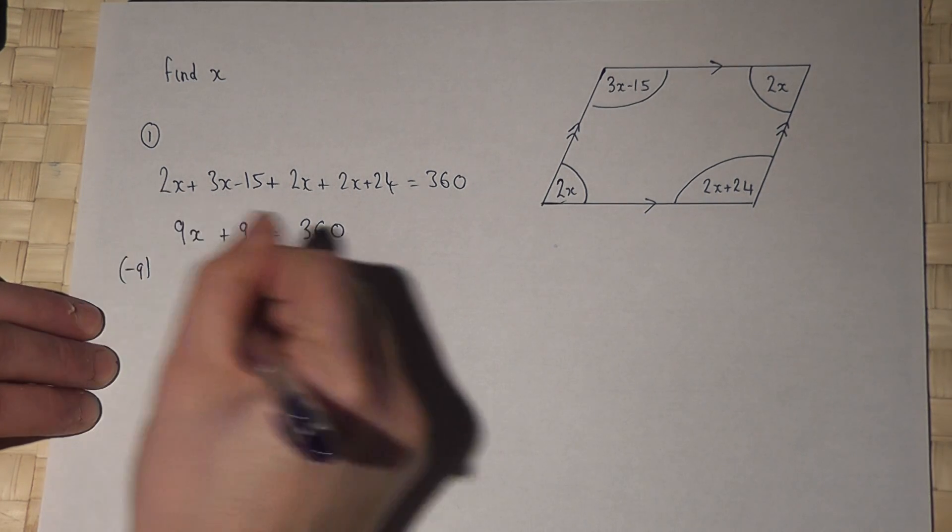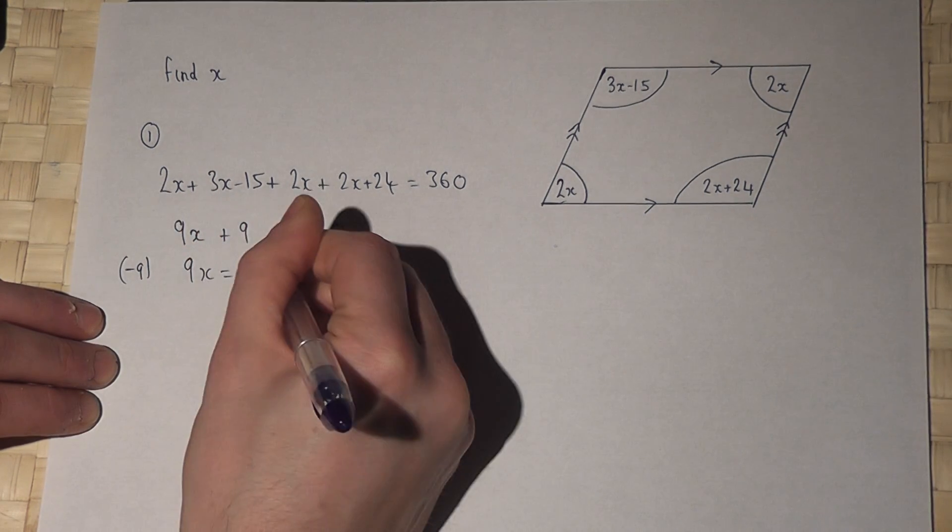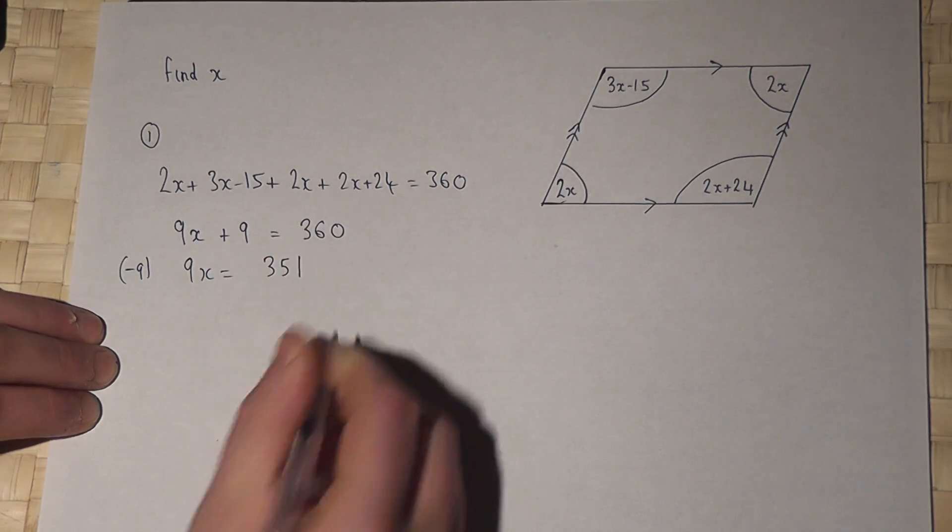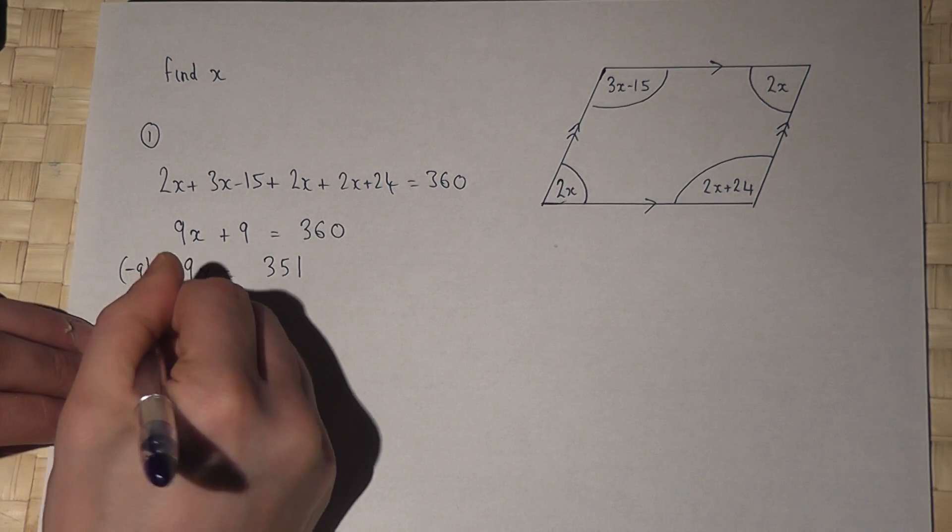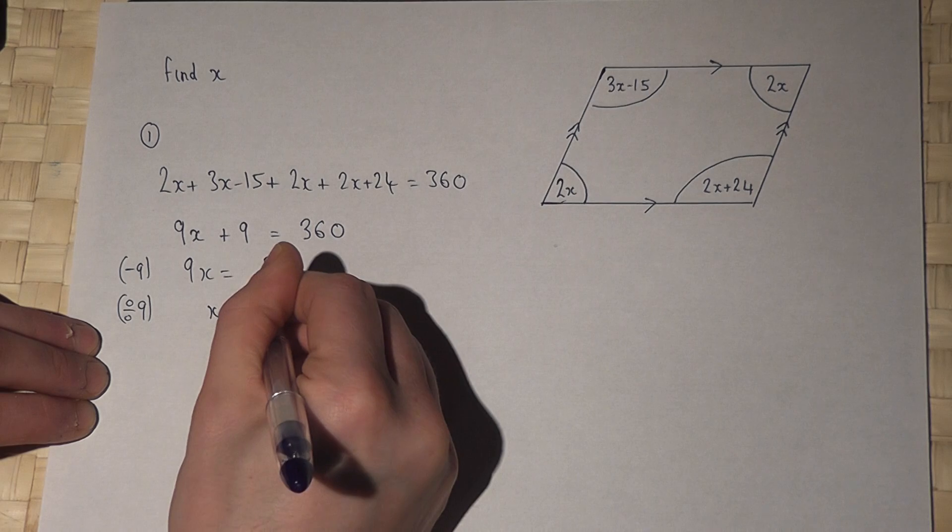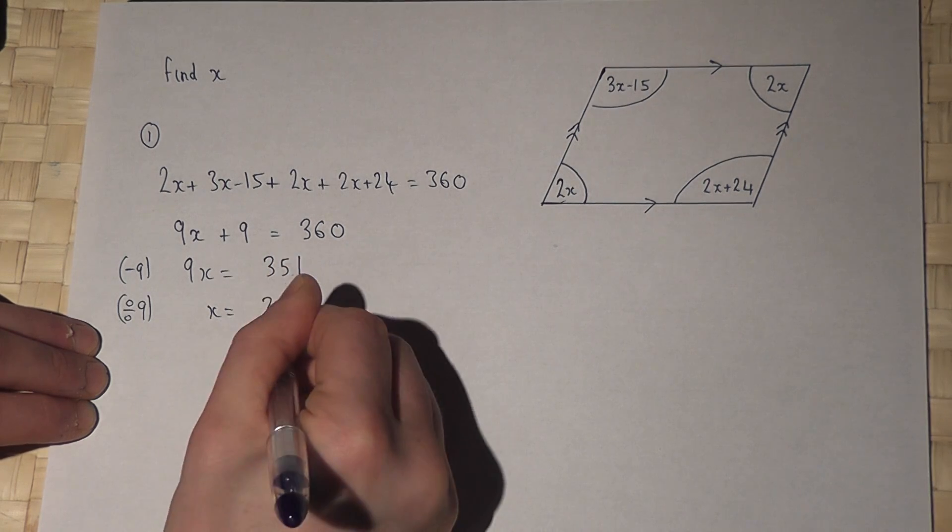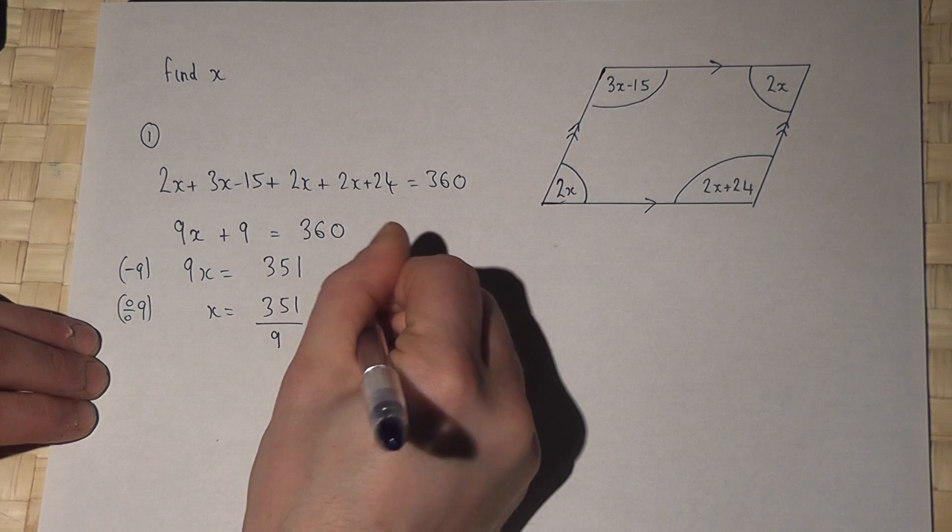If I then take away 9, I get 9x equals 351. If I then divide by 9, I get x equals 351 divide by 9, which is 39 degrees.